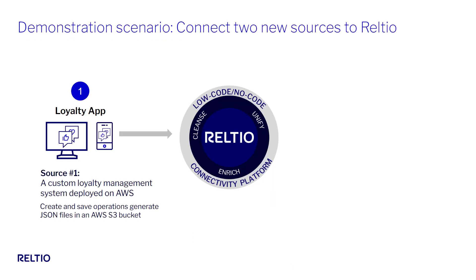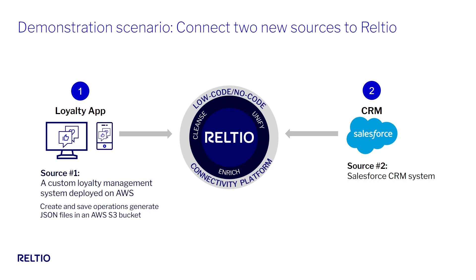In this demonstration, I will play the role of a citizen integrator or data analyst who's been asked to integrate two new sources of data into my RELTO environment via the RELTO integration hub. The first source is a custom-built loyalty application on AWS that generates JSON files in S3 for every create or update, and the second source is Salesforce.com. I've been provided with read-only credentials to access both the S3 bucket and my Salesforce instance, and I've been given a sample JSON file resulting from the create or update in the loyalty app. So let's get started.